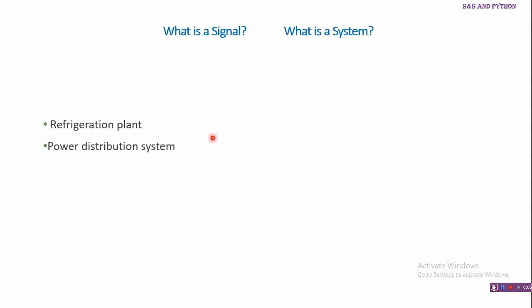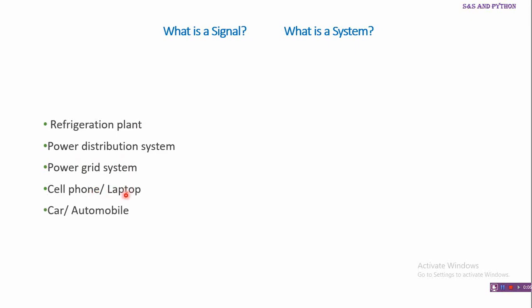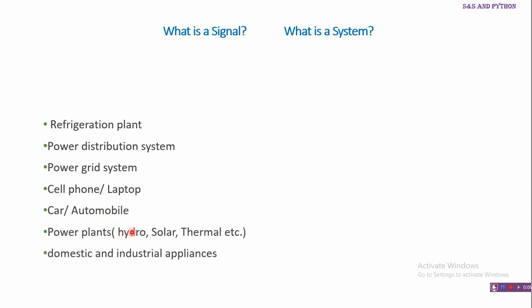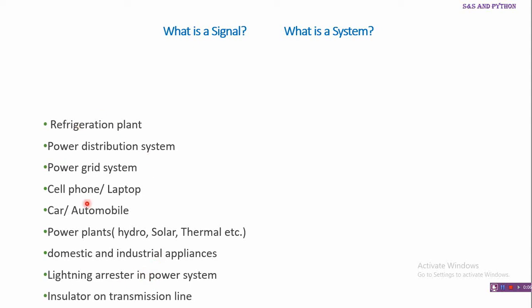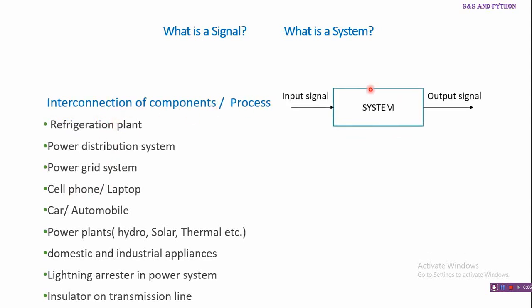We can think of numerous examples of systems surrounding us: a refrigeration plant, a power distribution system, a power grid, a cell phone, a laptop, an automobile, power plants, industrial and domestic appliances, lighting, lightning arrestors, or insulators on a transmission line. All of these are systems — nothing but an interconnection of components or processes, which can be viewed in block diagram form.